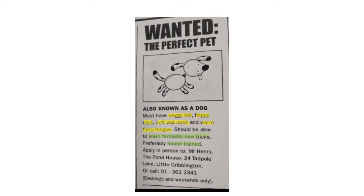He must have a waggy tail, floppy ears, a soft wet nose, a warm furry tongue. And in green I've highlighted some of the things that a dog should be able to do — learn fantastic new tricks or be house trained. So today we're going to use those ideas, but instead of writing an advert for a dog, we are going to write an advert for a cat.